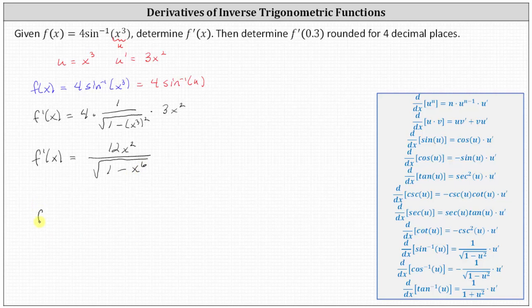And now we need to determine f prime of 0.3 by substituting 0.3 for x, which gives us 12 times the square of 0.3 divided by the square root of the quantity one minus the sixth power of 0.3.